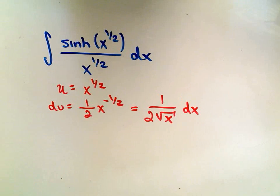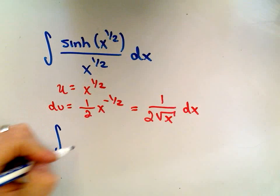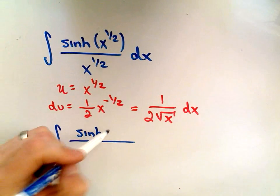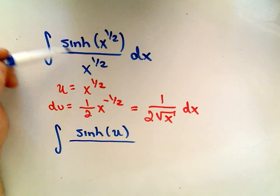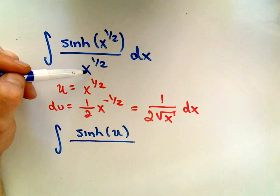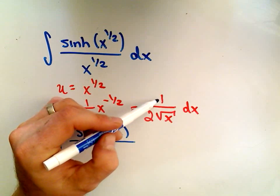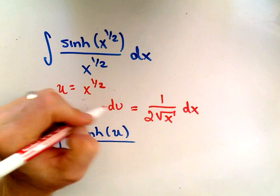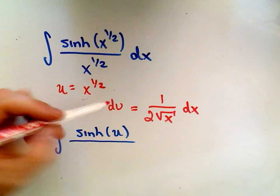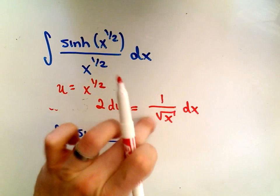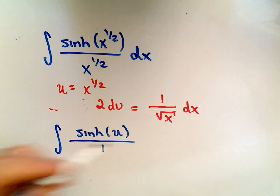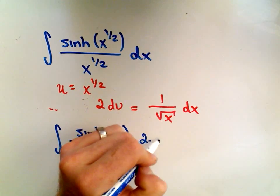When I rewrite this, I've got hyperbolic sine, the x to the one-half, that's what I'm calling u, and then I would still have one over x to the one-half, or one over square root of x. So one over two square root of x dx is the same thing as du. If I simply multiply both sides by two, I'll get two on the left that'll cancel on the right.